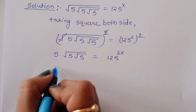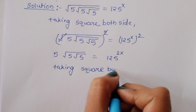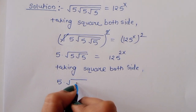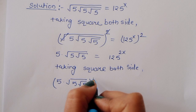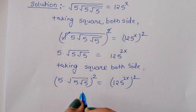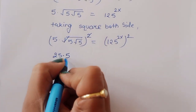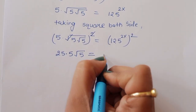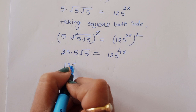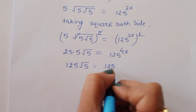Now, again taking square on both sides, we will get 5 times square root of 5 times square root of 5 squared is equal to 125 raised to x squared. Now, 5 squared is 25; this will cancel here. So 25 times 5 times square root of 5 is equal to 125 raised to 4x.